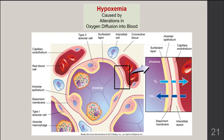Another cause of hypoxemia is altered oxygen diffusion into the blood, which occurs between the alveoli and capillaries across the alveolar wall. Oxygen must diffuse through multiple layers: the surfactant layer, alveolar epithelial layer, basement membrane, interstitial space, and capillary endothelium. Any damage to these layers can impair diffusion and lead to hypoxemia. This will become more important when discussing certain lung disorders in the upcoming lecture.